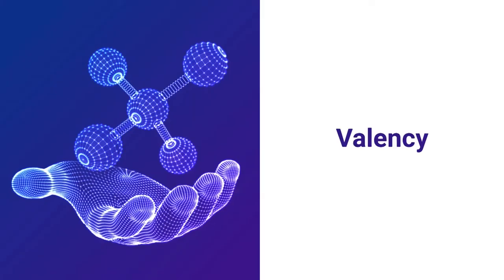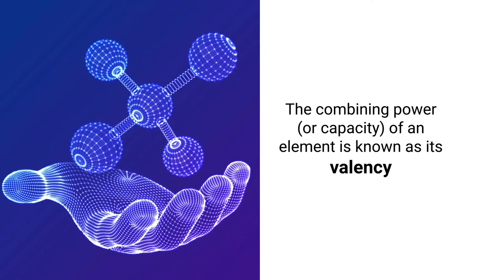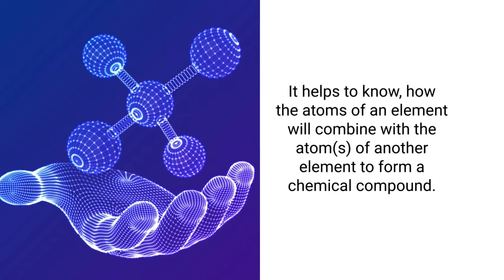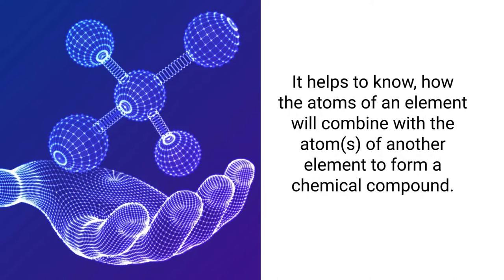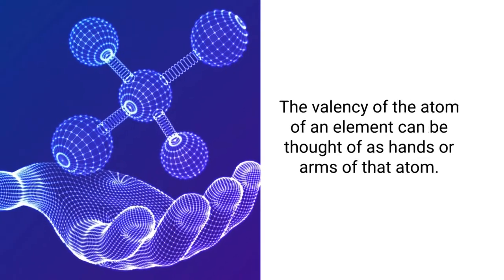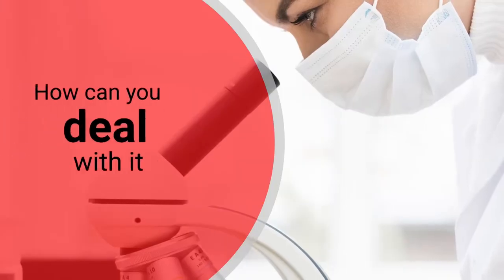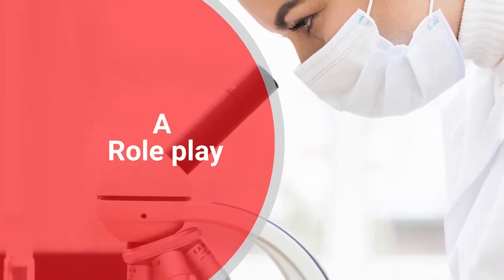When we talk about the concept of valency, we should be very clear what valency is. Theoretically, valency is the combining power or capacity of an element. It basically helps us to know how many atoms of an element will combine with atoms of another element, or the same element, to form a chemical compound. The valency of an atom can be thought of as the hands or arms of the atom. I would suggest a very interesting activity — you can use a role play technique here.